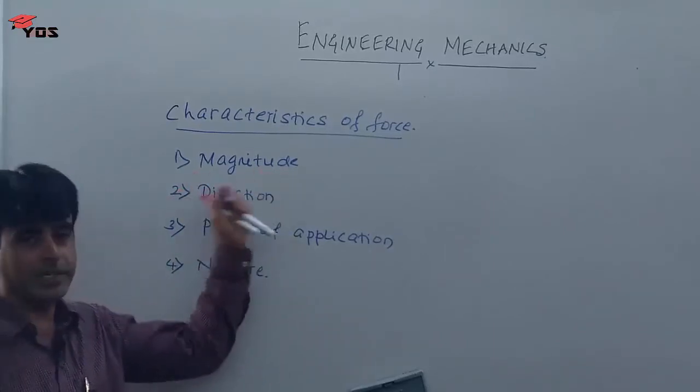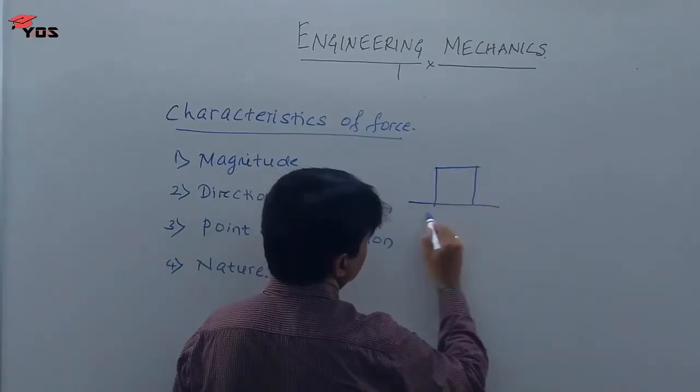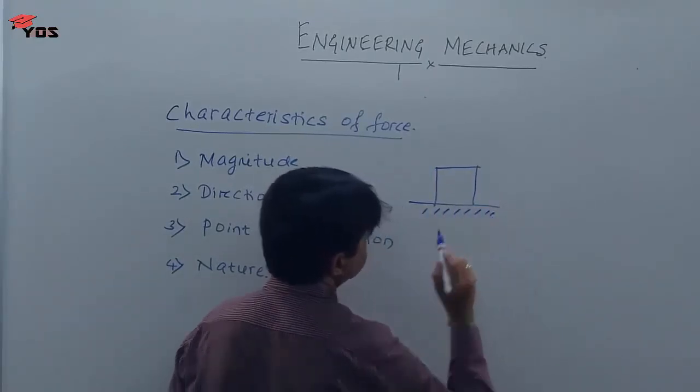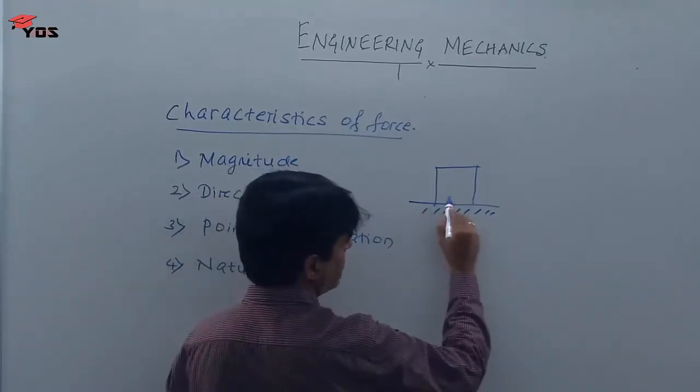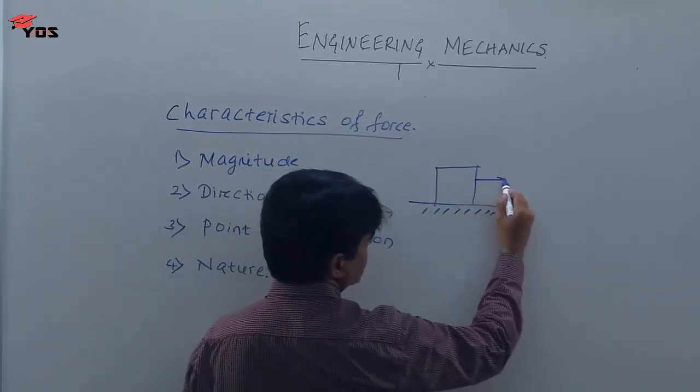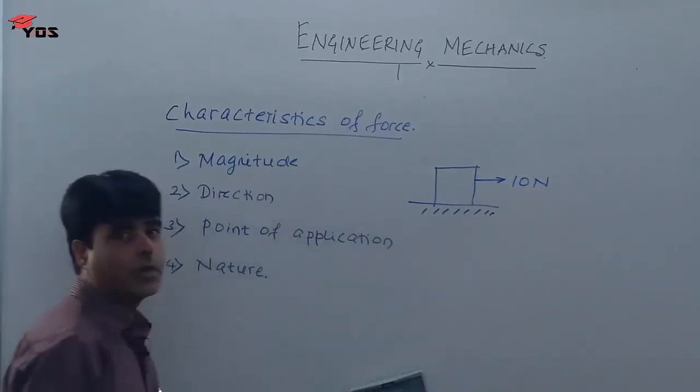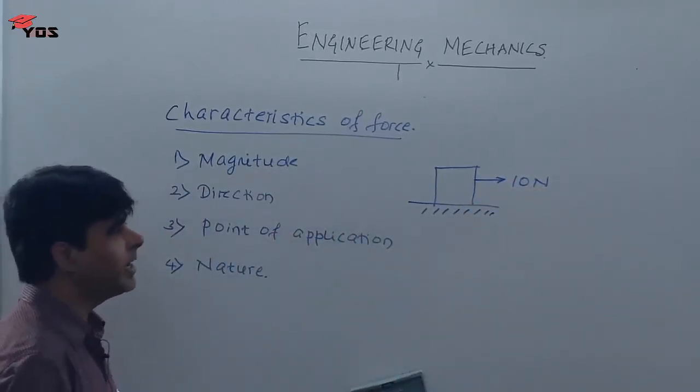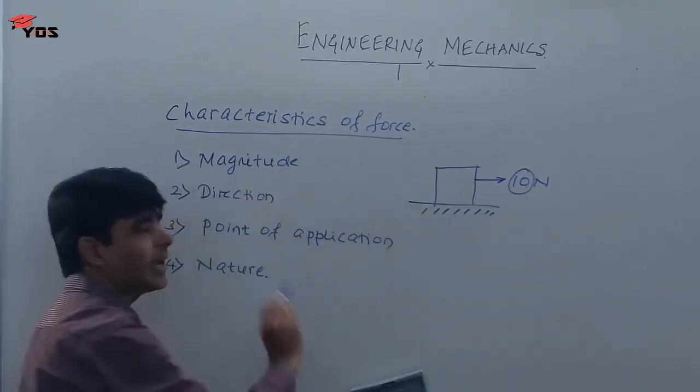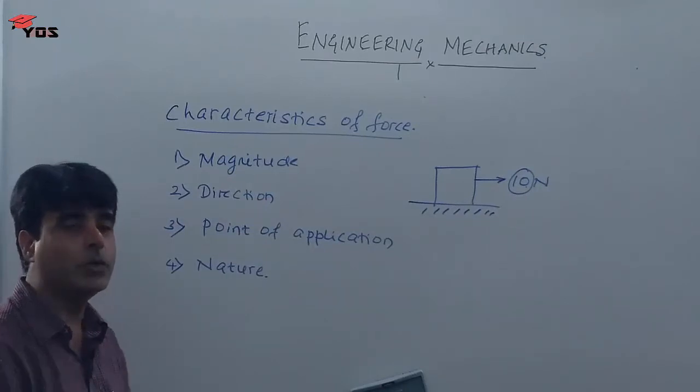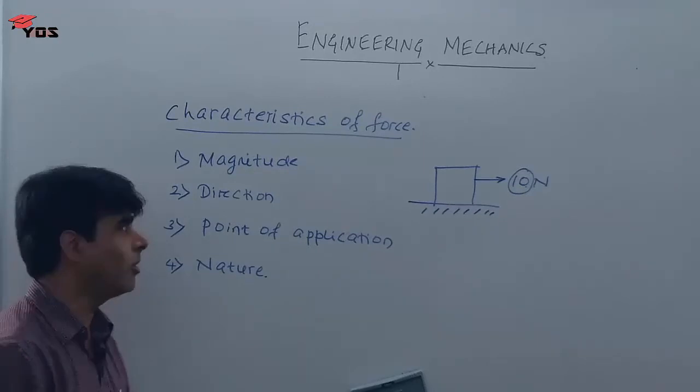Now, what exactly is magnitude? Now, take this example. Here the block is resting on horizontal plane. Suppose I apply a force of say 10 Newton in order to move it. I am applying 10 Newton. So, this 10 Newton is called as magnitude. It can be Newton, kilo Newton or whatever it is. It is the quantity of force that is applied on a block.